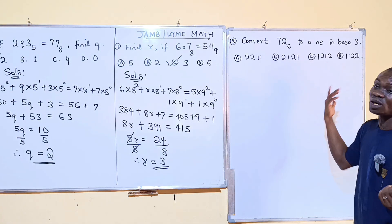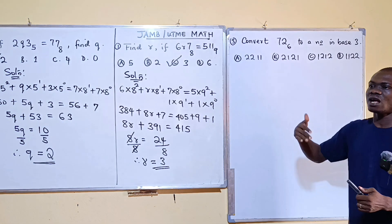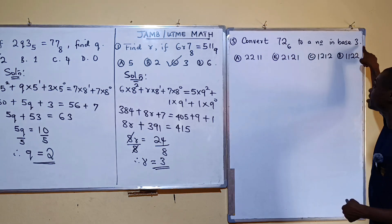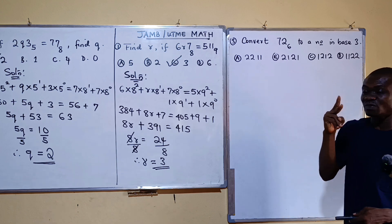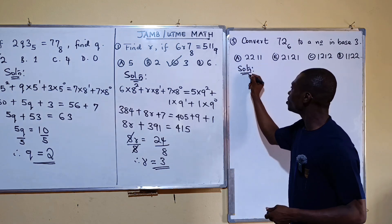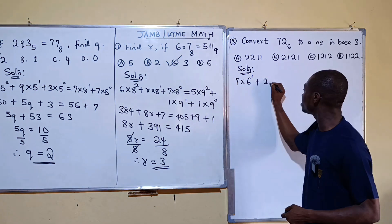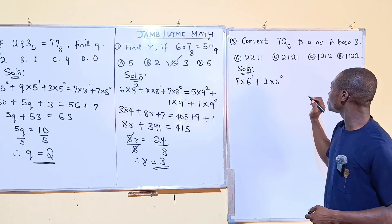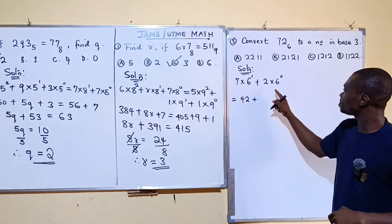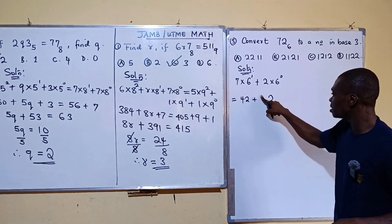The third question is a normal conversion. Recall we covered three types: from base 10 to any other base, from any base to base 10, and from one base to another not involving 10. Here we're asked to convert from base 6 to base 3, which requires two steps — first move to base 10, then to base 3. So: 7 times 6 to the power of 1 plus 2 times 6 to the power of 0.